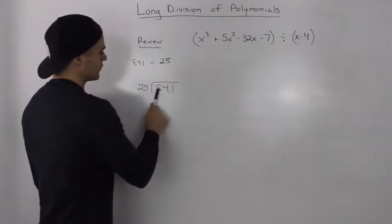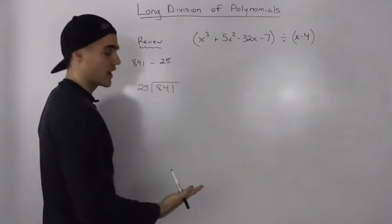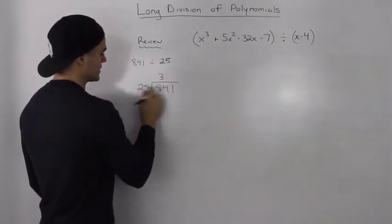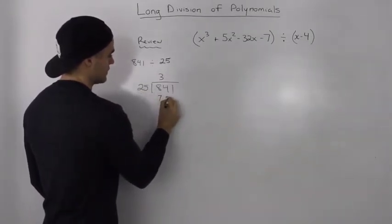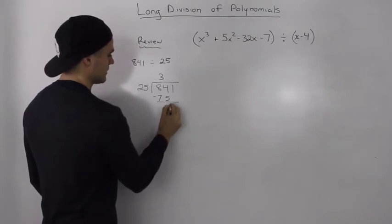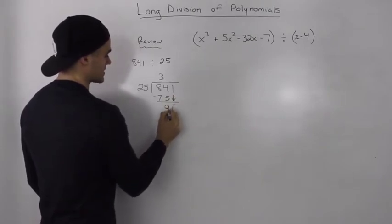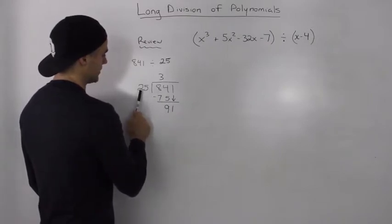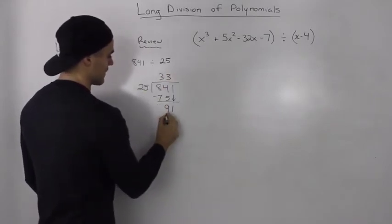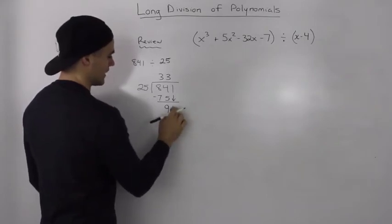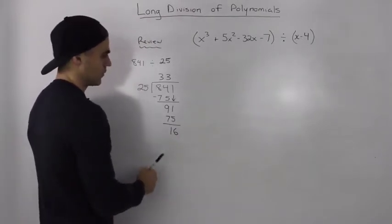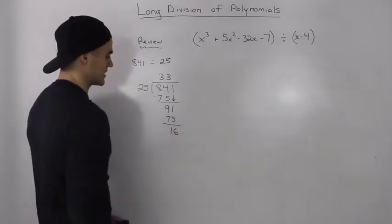We see how many times can 25 go into 8? Well it can't go into 8 any whole number of times, so then we check how many times can it go into 84? It can go in three whole times. 3 times 25 is 75, so we put 75 there, then 84 minus 75 gives us 9, and we bring the 1 down — so that's 91. Then 25 goes into 91 three whole times: 3 times 25 is 75, and 91 minus 75 is 16. 25 can't go into 16, so 16 ends up being our remainder.